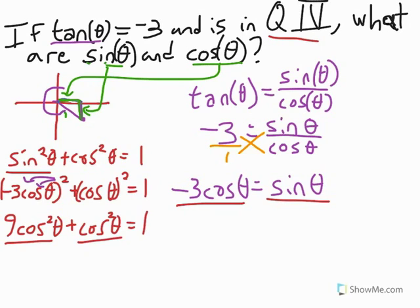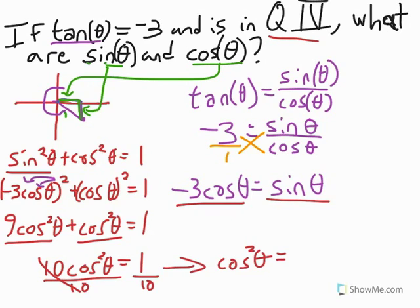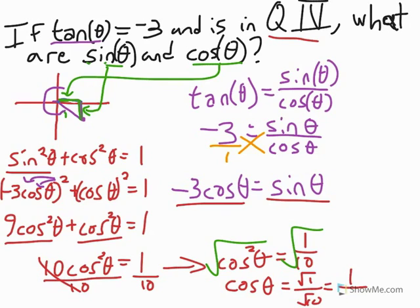Well, 9 cosine theta squared and 1 cosine theta squared is 10 cosine theta squared equals 1. And therefore, if we divide both sides by 10, we get cosine theta squared equals 1 over 10. But we're trying to find cosine of theta. So, what we're going to do is take the square root of both sides. And we'll get that cosine theta is equal to the square root of 1 over the square root of 10, which equals 1 over the square root of 10. Which, if we rationalize that denominator, we get square root of 10 over 10.